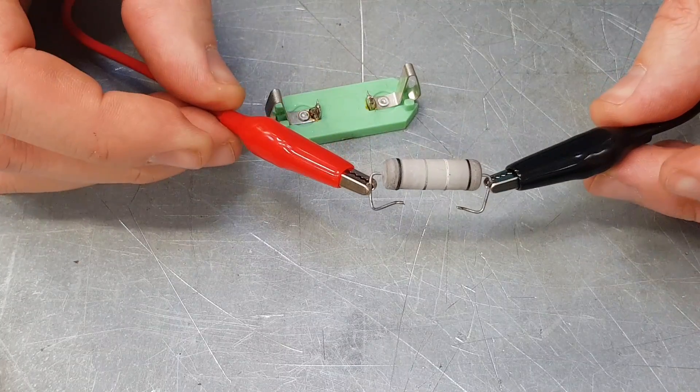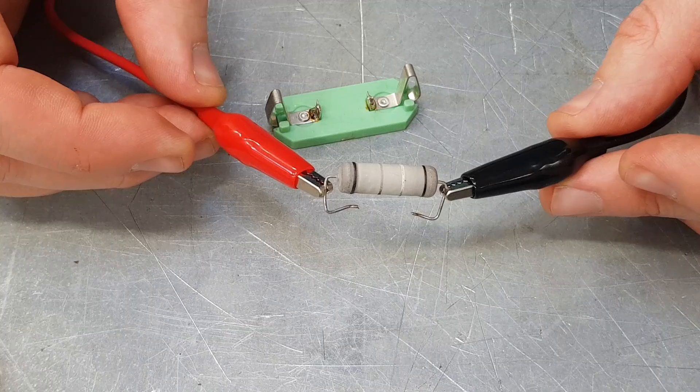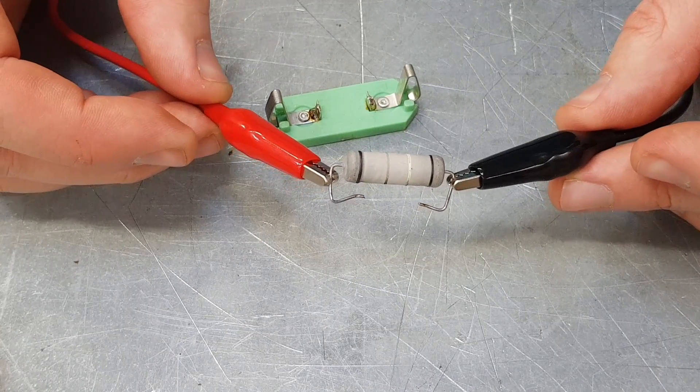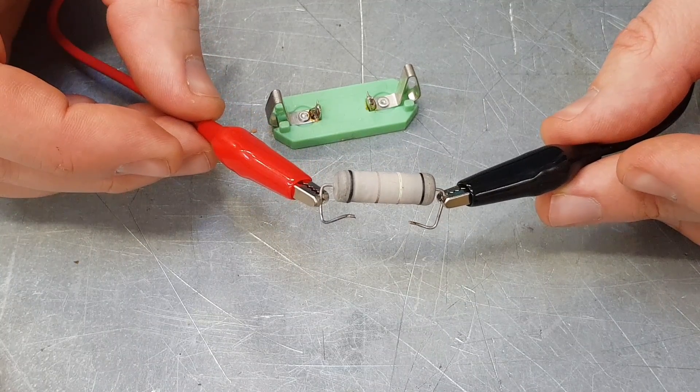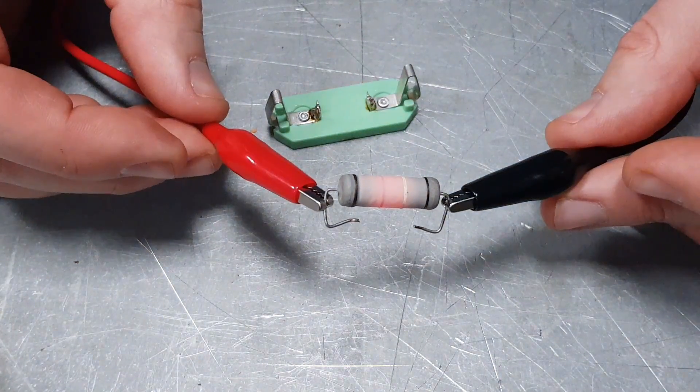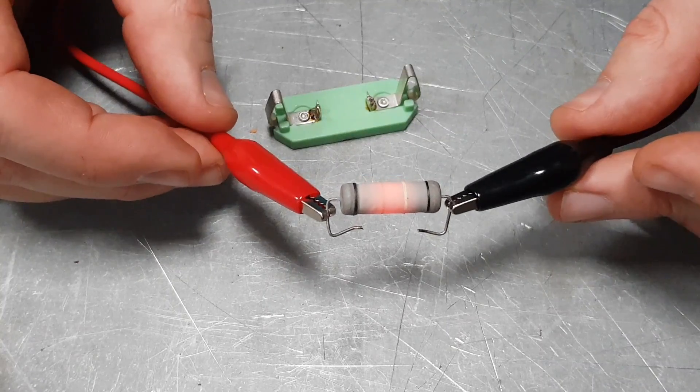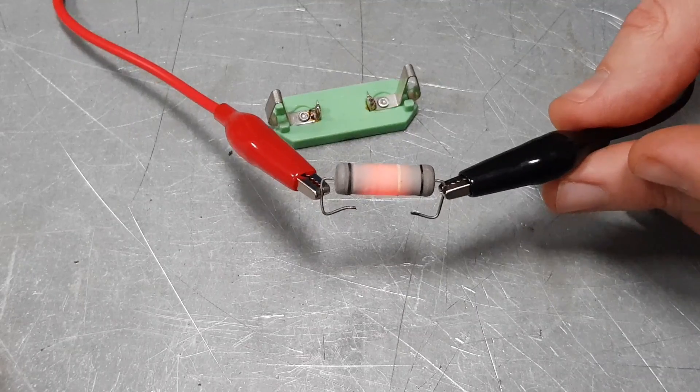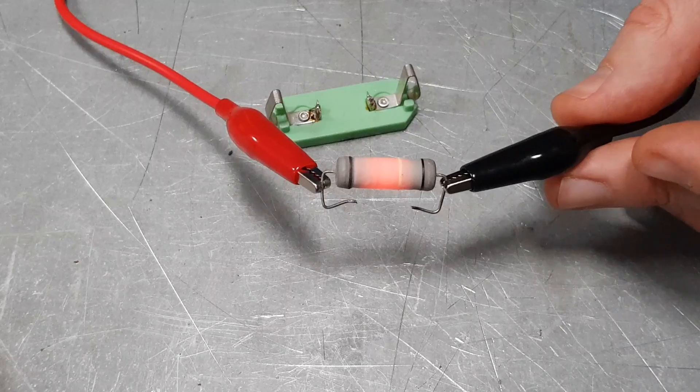Let's see if we can actually get that to glow now. Could one of you boys go and turn the lights off by the door please because I've got a feeling that we might actually start to see this going quite red. There we go, oh there it is. If you look in the camera you can see there that we've got a nice red glow going on, that's getting very very hot indeed.